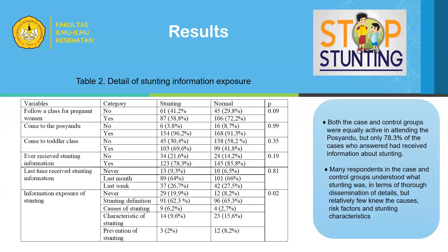Looking at the results of stunting information exposure, both the cases and control groups are equally active in attending posyandu, but only 78.3% of the cases reported receiving information about stunting. Many respondents in both groups understood what stunting is, but relatively few knew the causes, risk factors, and stunting characteristics. In general, mothers knew about stunting but lacked knowledge about the details — the causes, risk factors, how to prevent stunting, and the symptoms or characteristics of stunting.